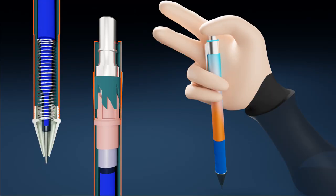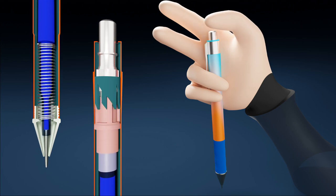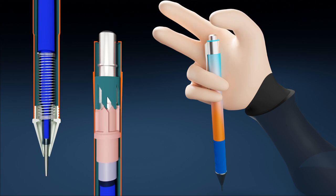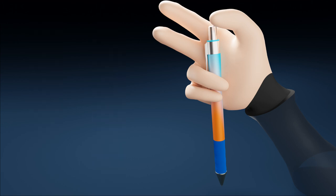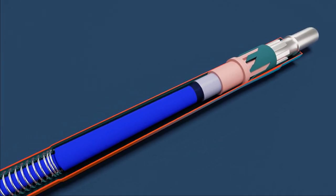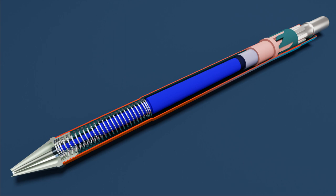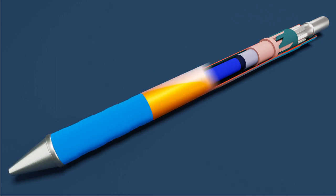So this is how a retractable pen works. There are other types of mechanisms available too, but this is the more popular mechanism used in click pens. Thank you for watching.